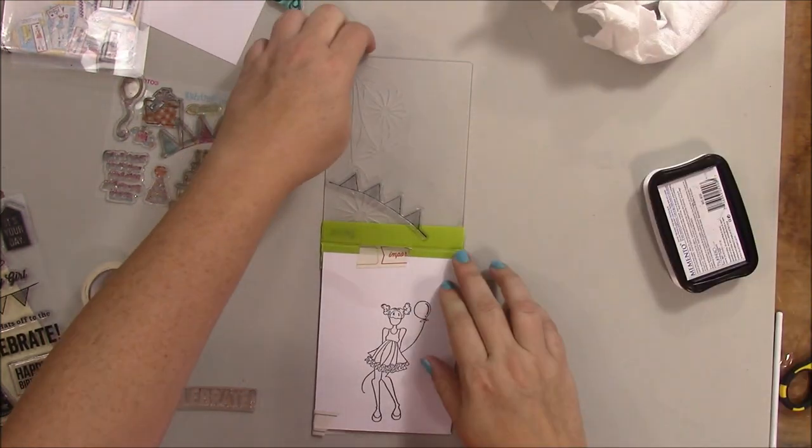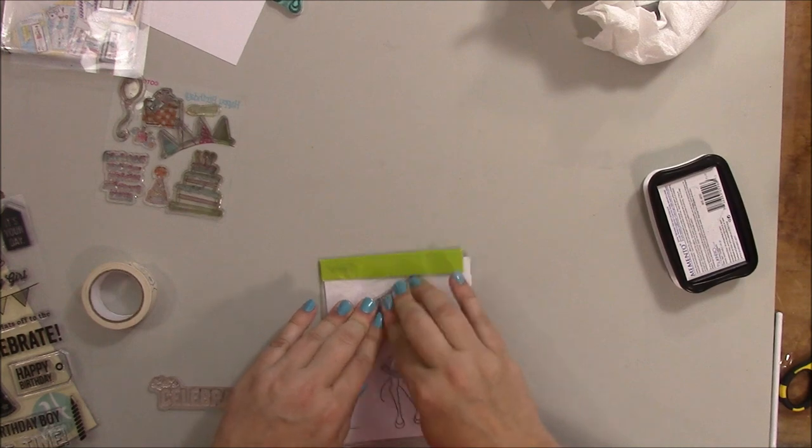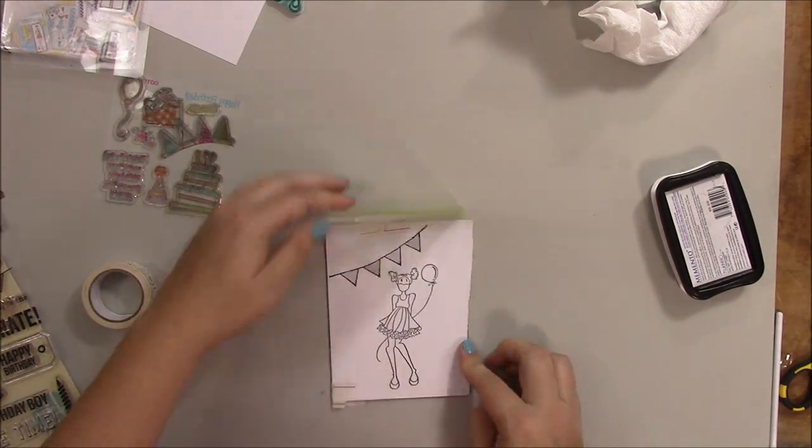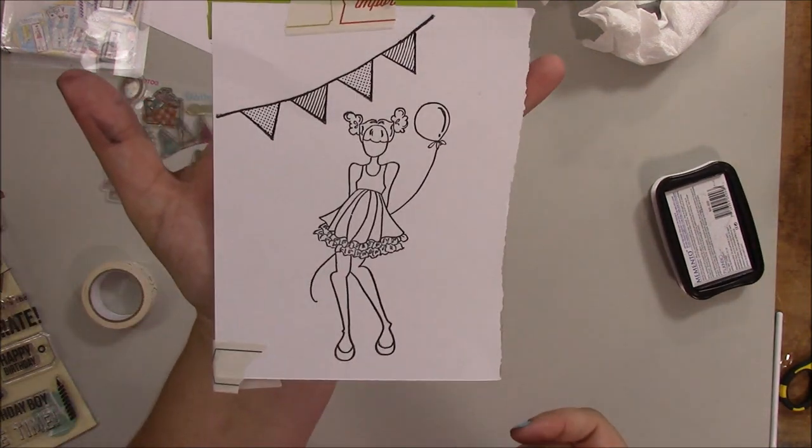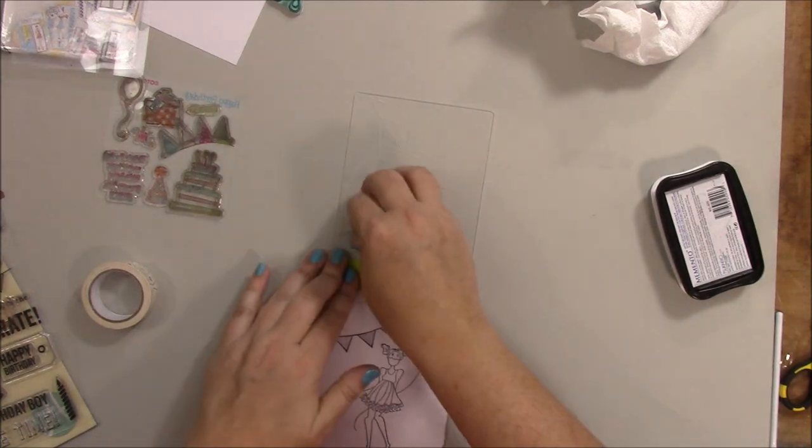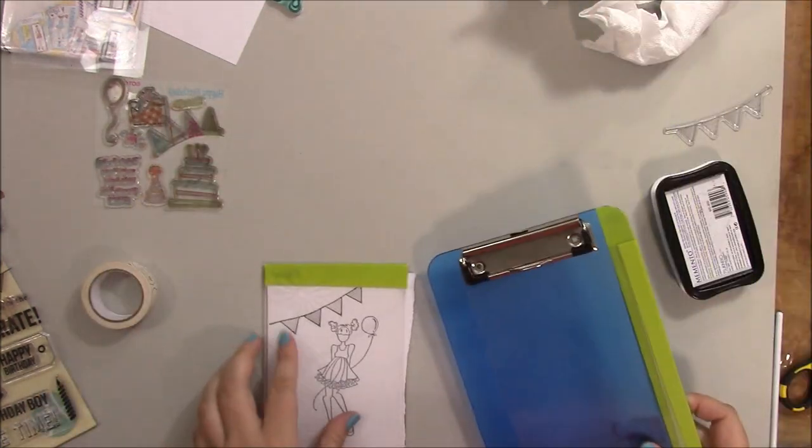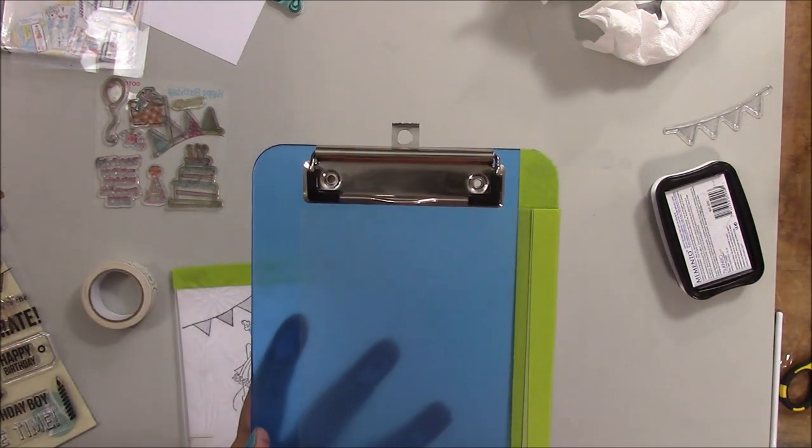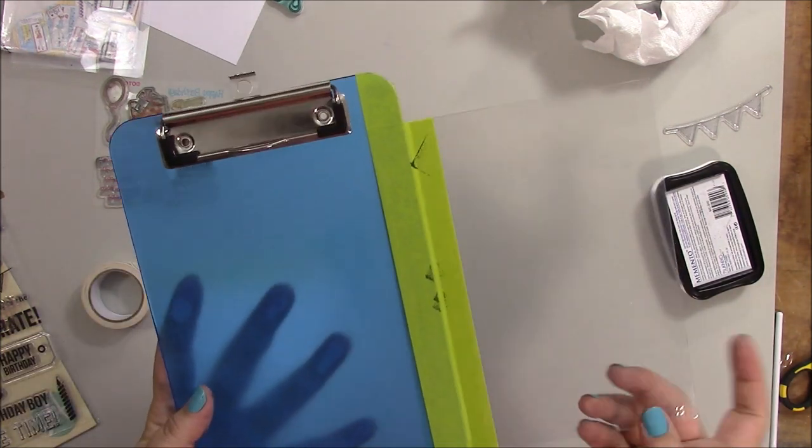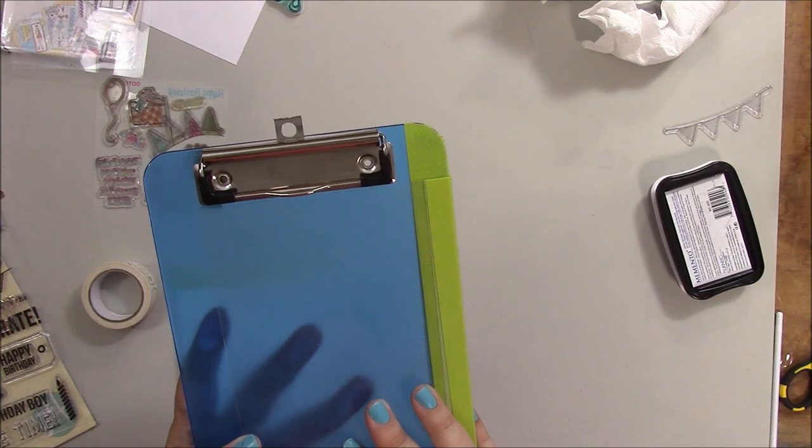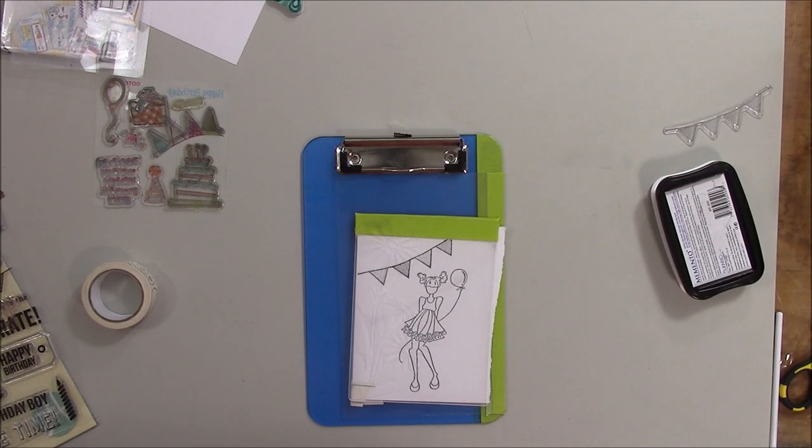Just going to wipe that off. Okay. There you have it, two do-it-yourself versions of the Stamper stamp folder. We have the embossing folder and the clipboard with a piece of hard plastic. Thank you for watching. I hope you've enjoyed this video. Please give a thumbs up and subscribe below.